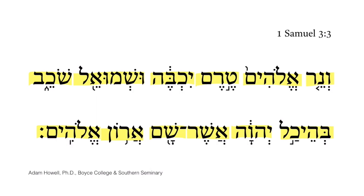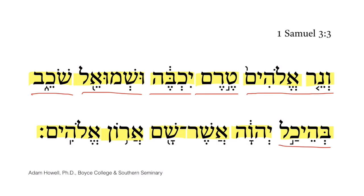The full translation would go like this: Now the lamp of God had not yet gone out, and Samuel was lying down in the temple where there was the ark of God. Or we could say, where there the ark of God was.